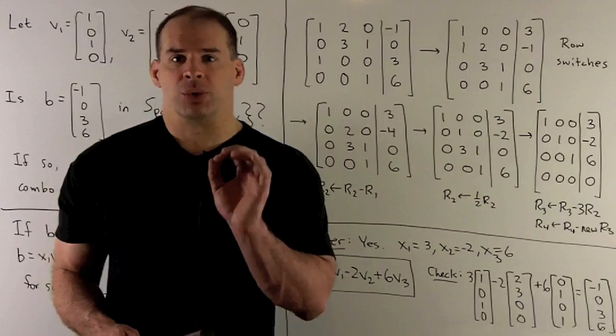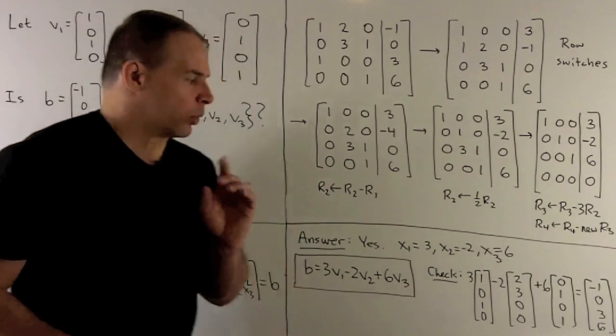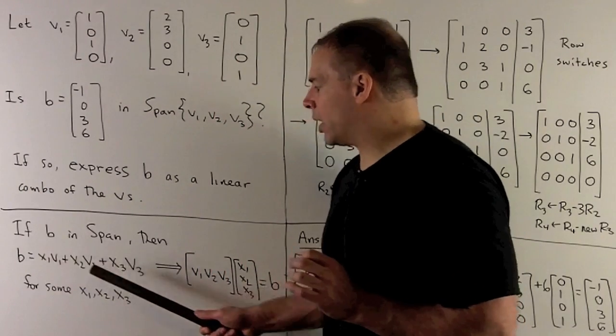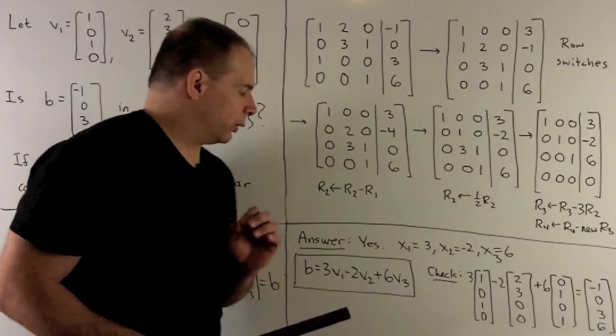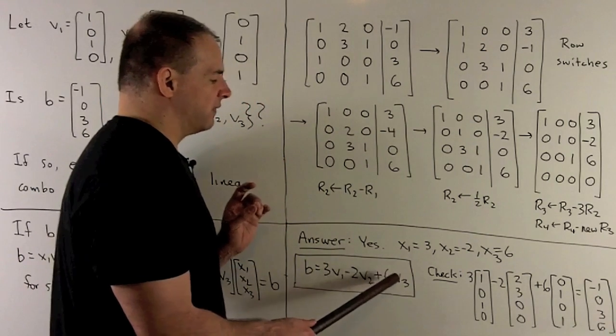So, not only is that my solution, that tells me how to set up the linear combination. If you go to your original equation, that's telling you what to put in for x1, x2, and x3. So b is equal to 3v1 minus 2v2 plus 6v3.